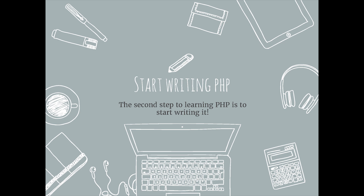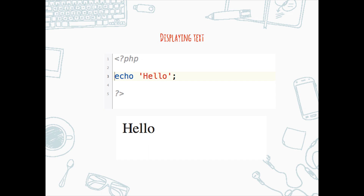The second step to learning PHP is to start writing it. Time to stop reading all those books and start writing some code, because practice will make you a better programmer. Displaying text: you will need to use the opening and closing tag of PHP. Type echo and a string, which is in single quotes. To close the line of code, you use a semicolon. Use a text editor of your choice — a popular one is Notepad++, which is free to download, and that's what you'll use for creating pages.